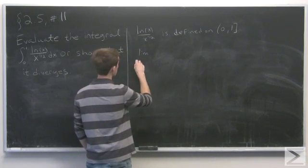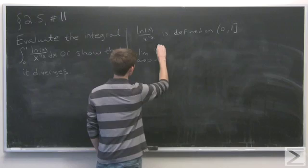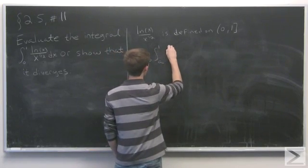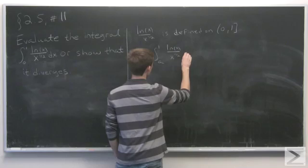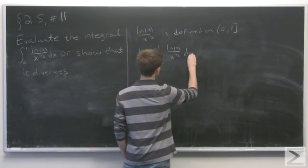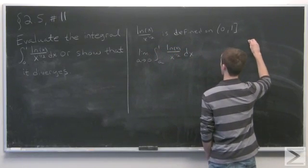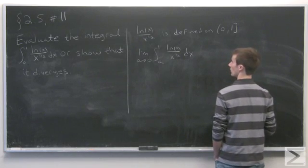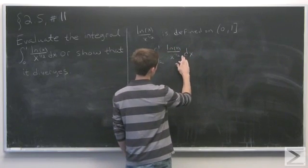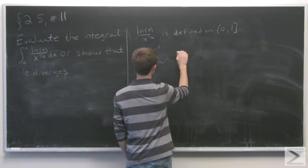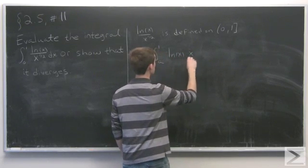So we write the integral as a limit instead: the limit as a goes to 0 of the integral from a to 1 of natural log of x over x to the one half dx. If we use integration by parts, we write this a little bit to make it easier to see what we're assigning dv and u to be.